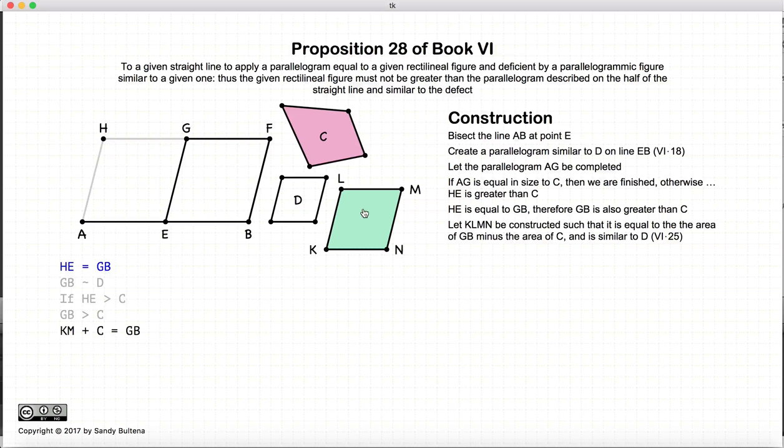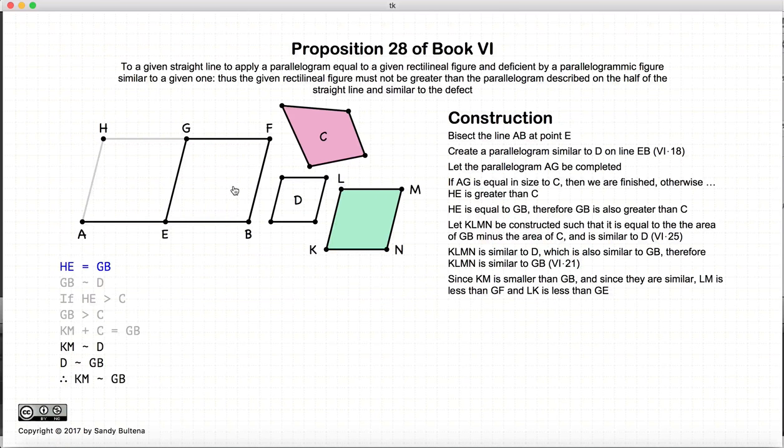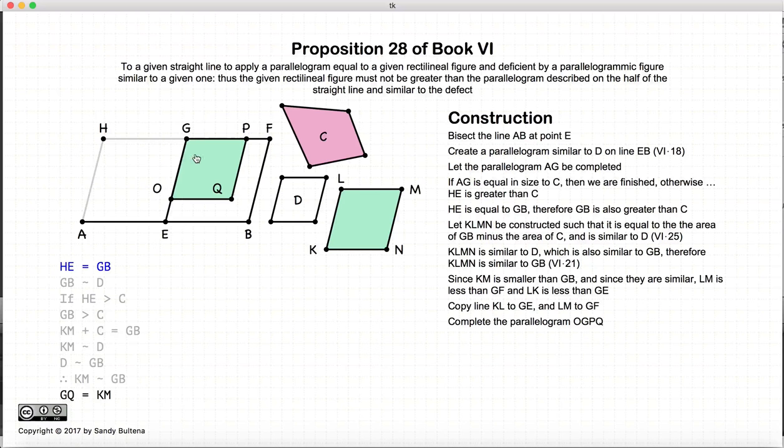So now that we have our KLMN constructed, we'll carry on with Euclid's instructions. Now KM is similar to D, and D is similar to GB, so KM is similar to GB. Now since KM is smaller than GB, we're going to copy the lines LM to GF and LK to GE. So we've copied those lines, and we are going to now construct a parallelogram that is equal to KLMN at this point. So now GOQP is equal to LKLMNK, or GQ is equal to KM.